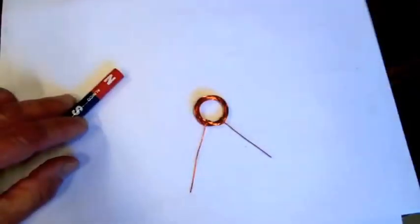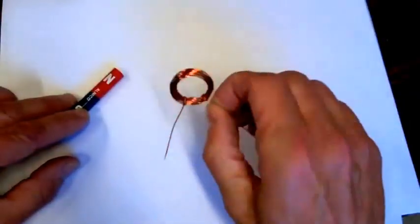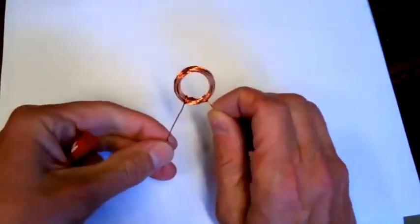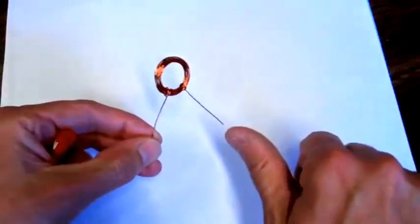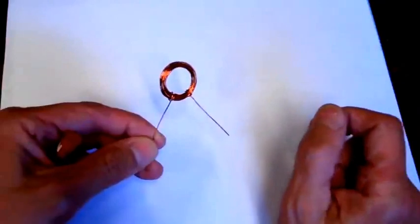A current flowing through a wire will generate a magnetic field. If that wire is formed into a coil, then if you put the fingers of your right hand in the direction of the current flow, your thumb will point in the direction of the magnetic field in the center of the coil.